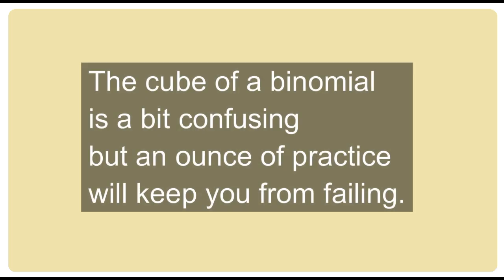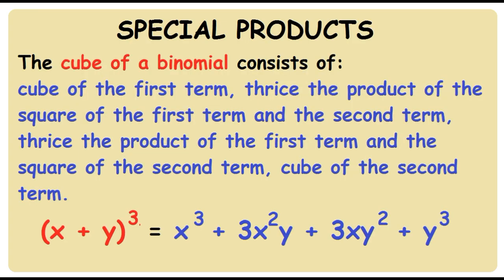The cube of a binomial is a bit confusing, but an ounce of practice will keep you from failing. The cube of a binomial consists of: cube of the first term, thrice the product of the square of the first term and the second term, thrice the product of the first term and the square of the second term, cube of the second term.